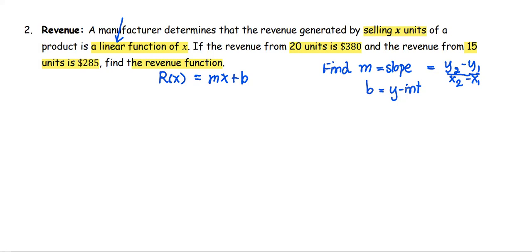Since r is a function of x, the ordered pairs will be in the form (x, r). So we look for the two ordered pairs from the provided information. The first pair: 20 units is $380, so the ordered pair is (20, 380), where 20 is x and 380 is the revenue. The second ordered pair is (15, 285).